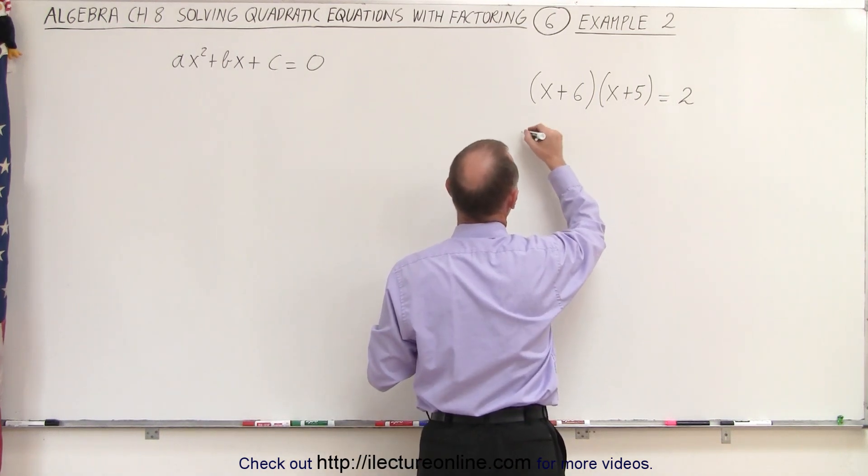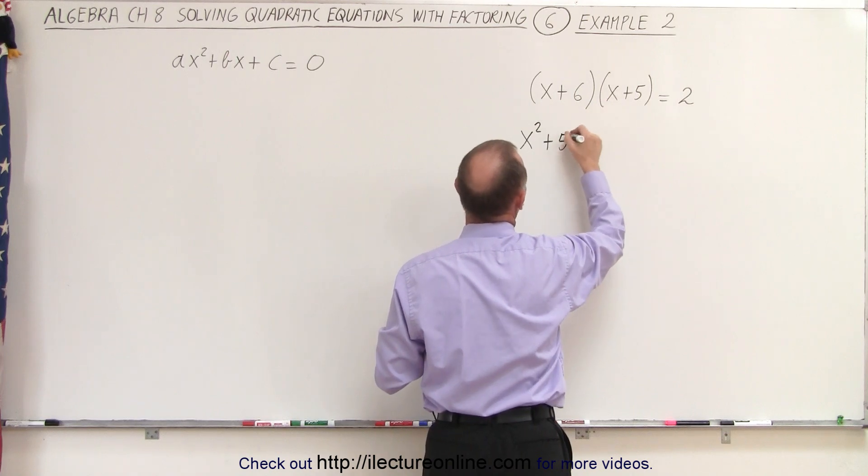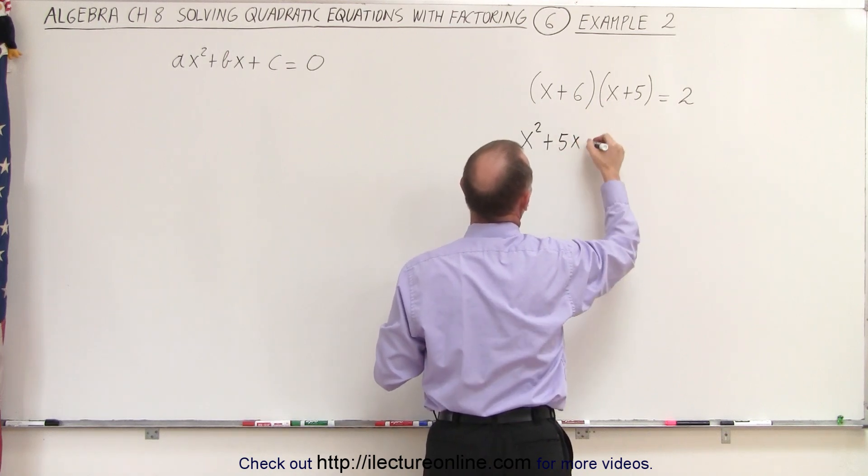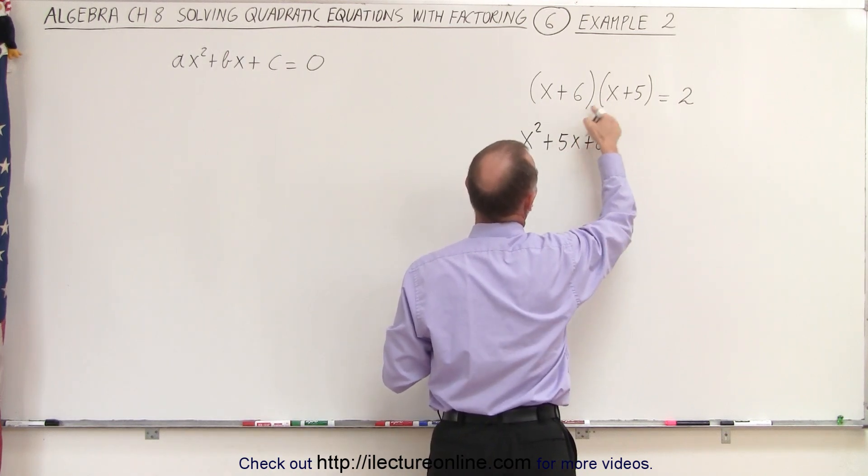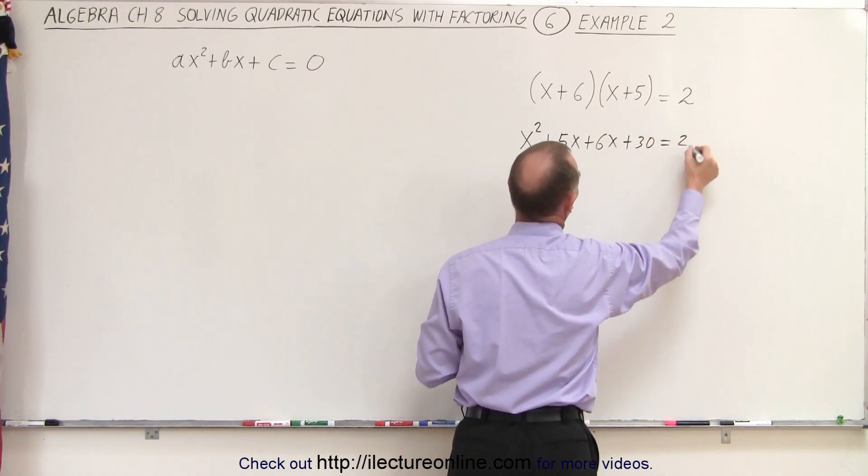So here we have x times x, which is x squared, plus x times 5, which is 5x, plus x times 6 is plus 6x, and 6 times 5 is plus 30 equals 2.